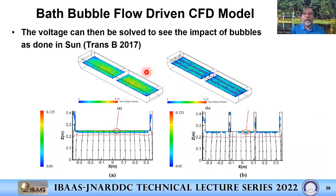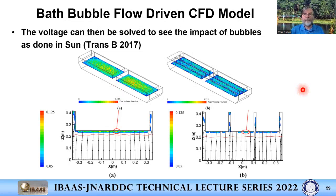From Aarhus University, this kind of model was used to study the impact of anode slots: introducing slots reduces bubble layer thickness and coverage, thereby reducing resistance due to the bubble layer. The model accounts for this, and results show that introducing slots reduces resistance through the bubble layer as observed in real cells.